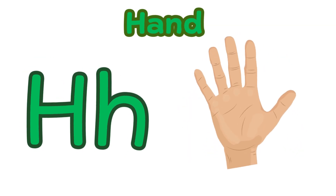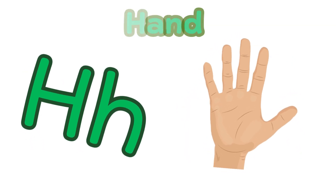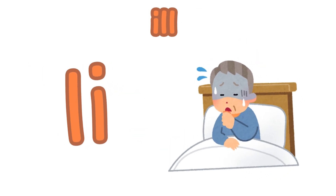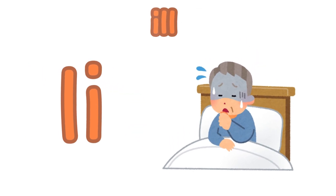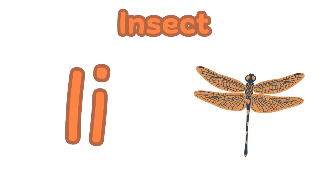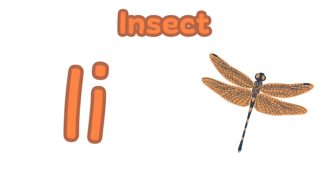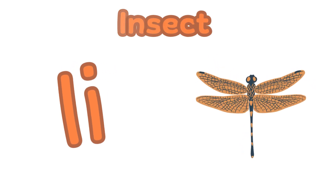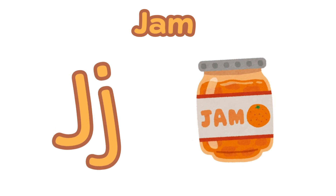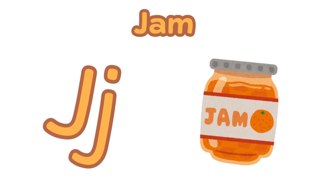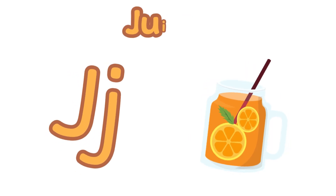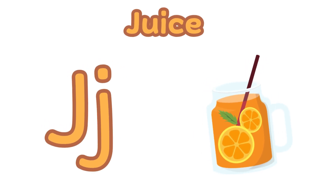H is for hand. H, h, h — hand. I is for insect. I, i, i — insect. J is for jar. J, j, j — jar.